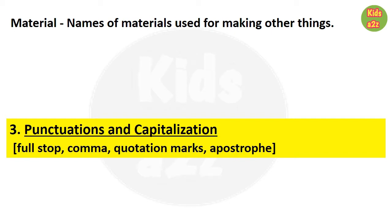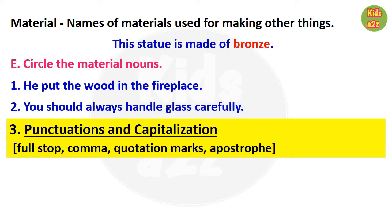Words which are the names of materials used for making other things are called material nouns. For example: 'This statue is made of bronze' — here 'bronze' is the material noun. For question E, kids need to circle the material nouns. In 'He put the wood in the fireplace,' they circle 'wood.' In 'You should always handle glass carefully,' the material noun is 'glass.'